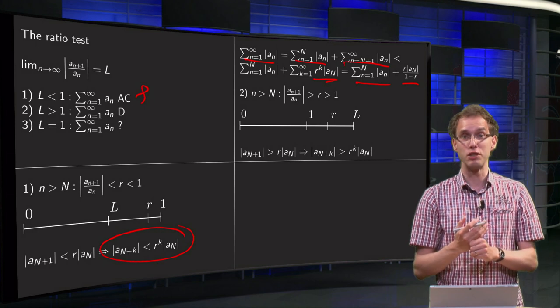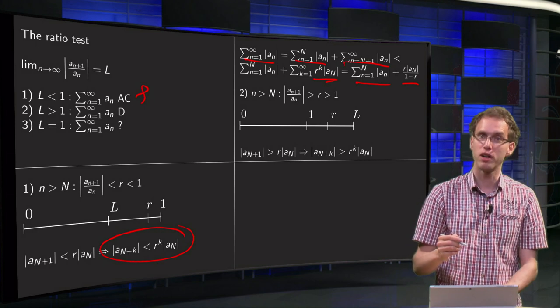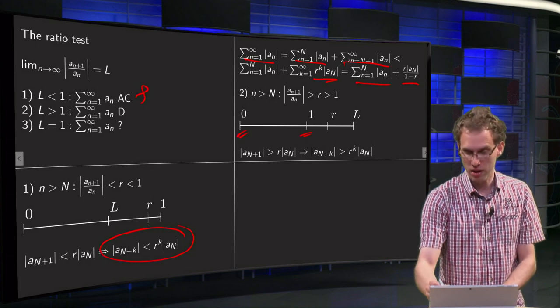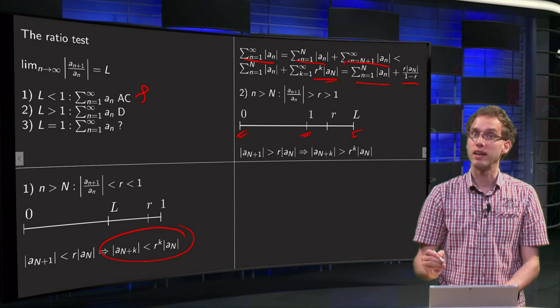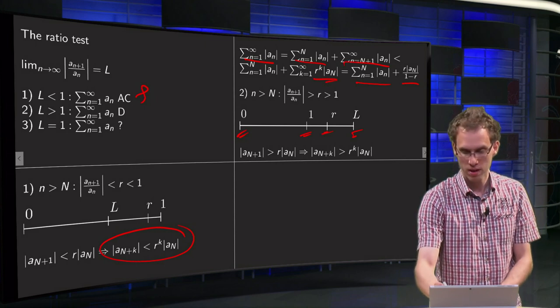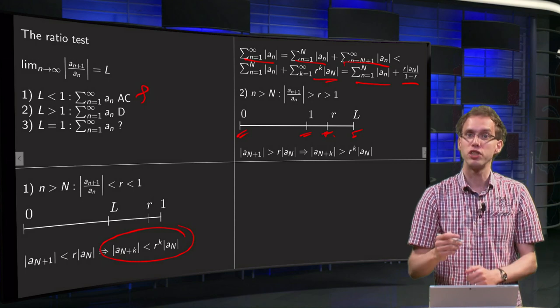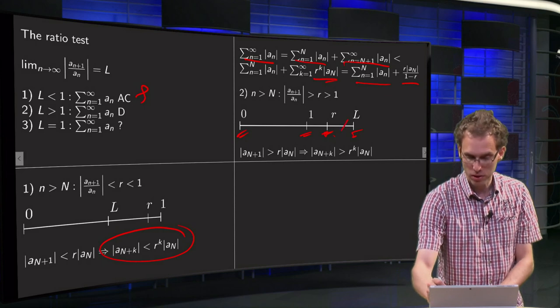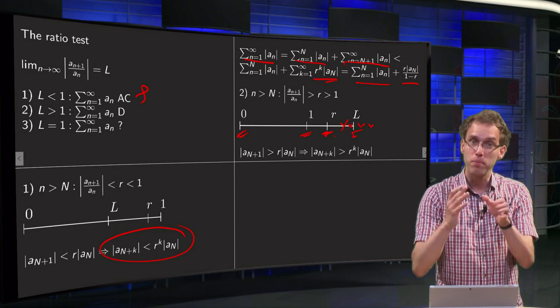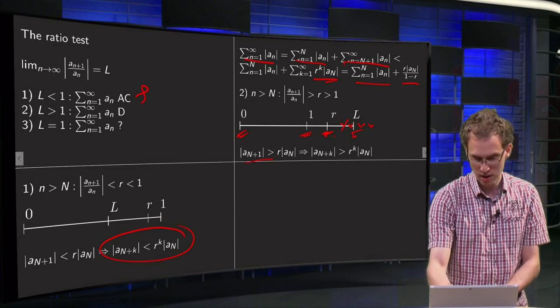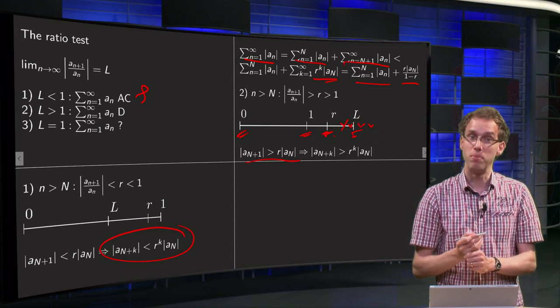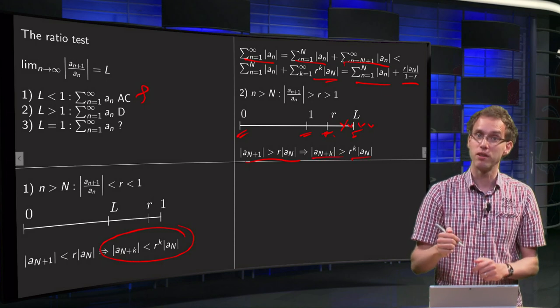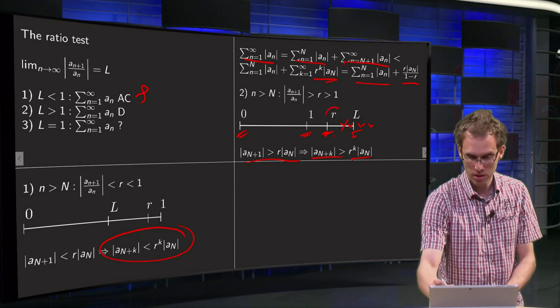Well, if your L is bigger than 1, you can do a similar argument. Here we have r and 1, of course bigger than 0 still, and your L is bigger than 1, and then you can find of course again an r in between, and then you know that if you are far enough in your series, all your quotient a_{n+1} over a_n will be close to L, so in particular over here somewhere, they will be bigger than r. So that is what it says over here, a_{n+1} is bigger than r times a_n, and then do the same argument, a_{n+k} is bigger than r to the k times a_n, where this r is now bigger than 1.